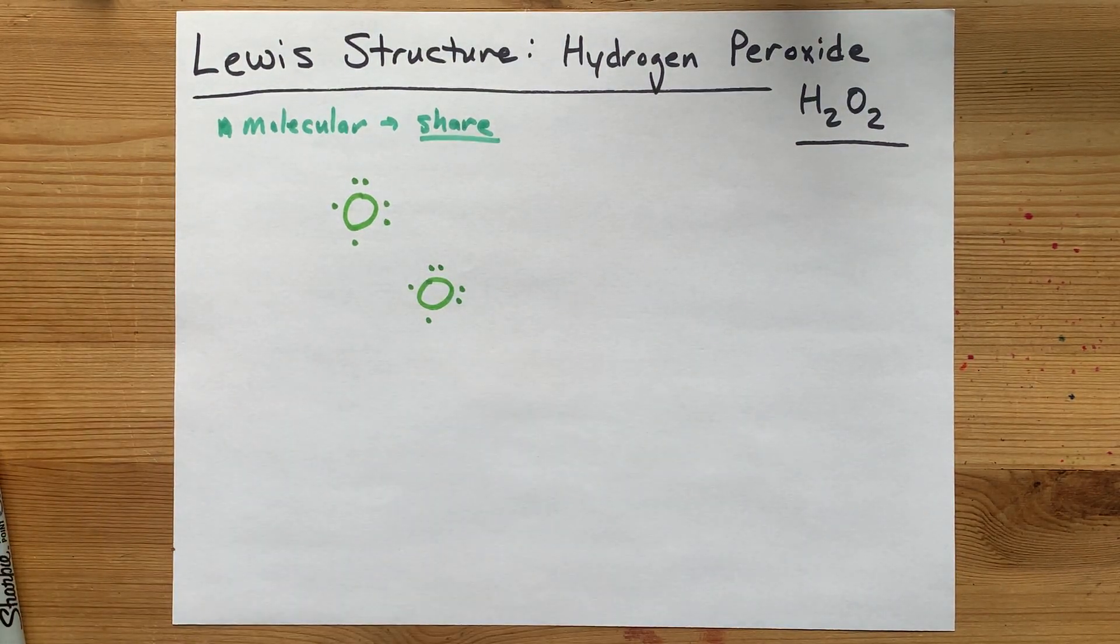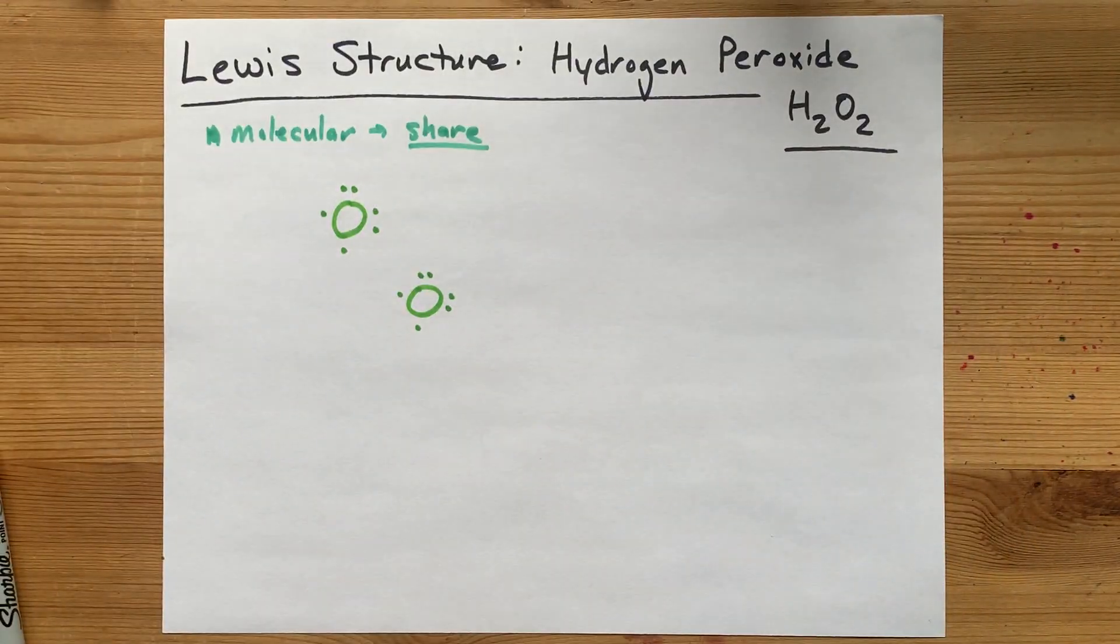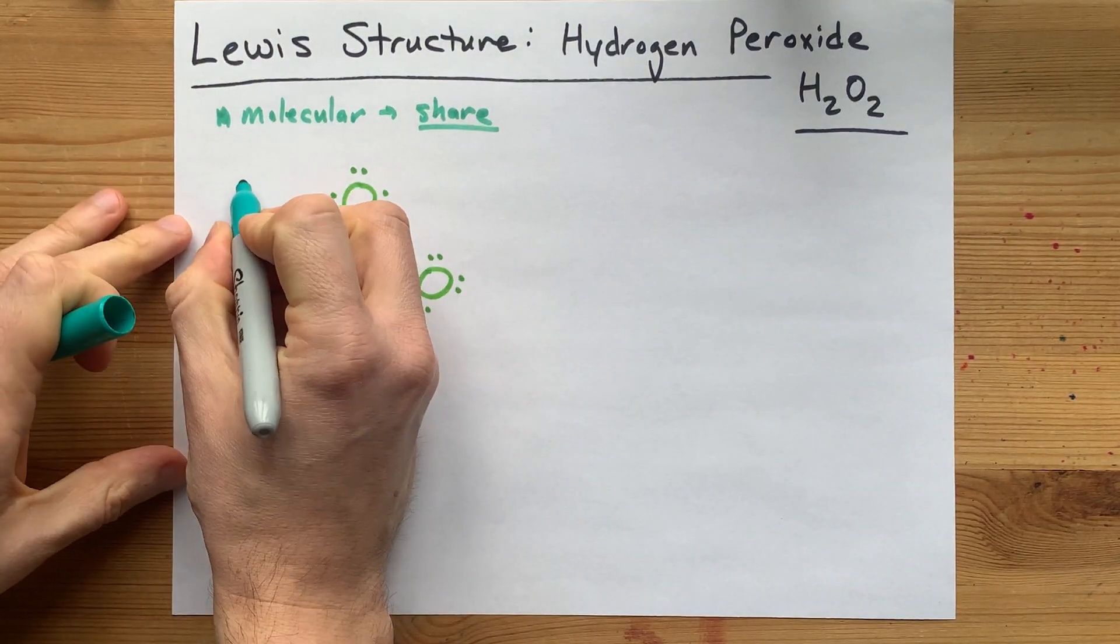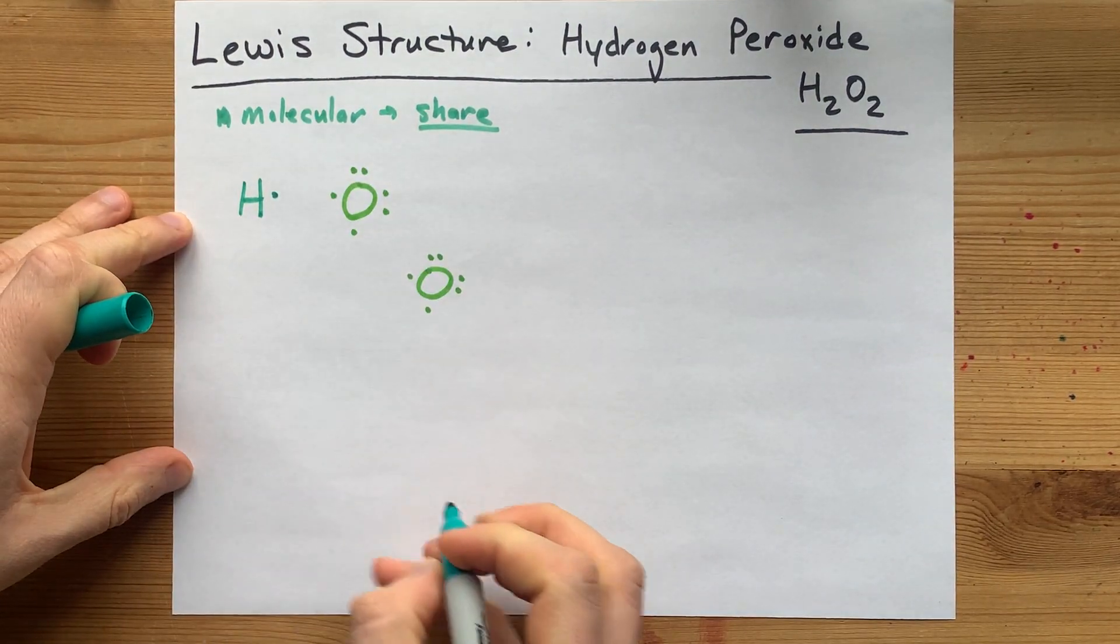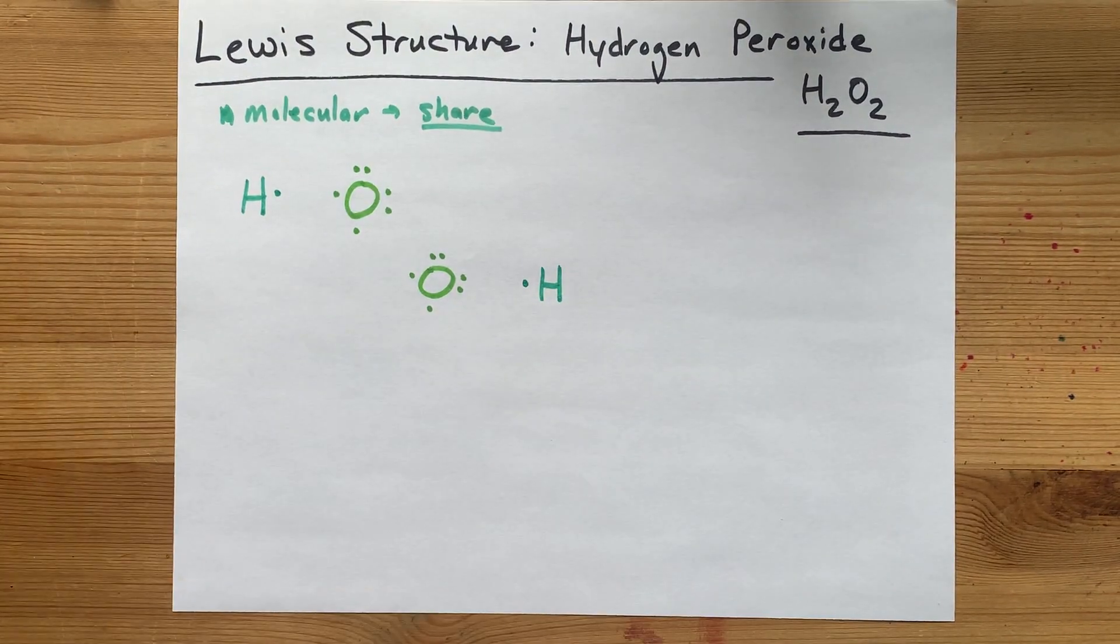Okay, now hydrogen is in group 1, so it brings one valence electron with it. I'm going to draw an H with one valence electron, and on the other side another H with another valence electron.